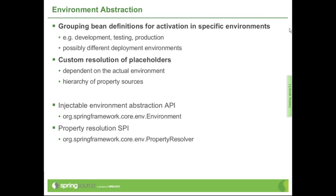In Spring 3.1, we provide facilities for interacting with the environment in an abstract fashion, and for automatically adapting the Spring application to the specific environment it is being deployed to. The central API entry point is an Environment type, which is injectable into user components. From an SPI perspective, the PropertySource is the most important interface — the source of property values used for property placeholder resolution is highly customizable, and as of Spring 3.1, those property resolution rules are much more customizable than they used to be.